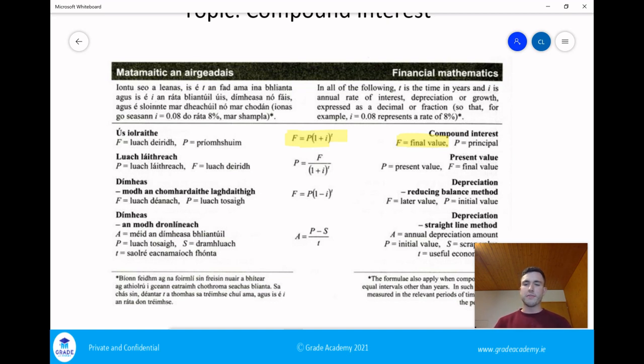I like to think of that as the future value, so the amount of money we're going to have in the future. It says P is the principal and I like to think of that as the present value. So for me F is the future value and P is the present value.